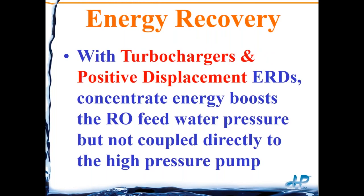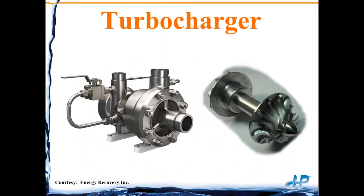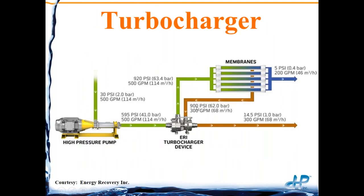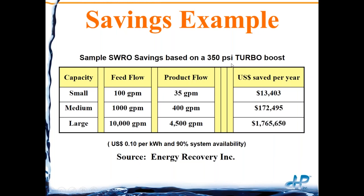With turbochargers and positive displacement, the energy recovery devices take the concentrate energy to boost the RO feed water pressure, but they're not coupled directly to the high pressure pump. With the turbocharger, you have a dual pump that has two impellers on the same shaft. The concentrate is coming and turning the impeller on the concentrate side, which — since it's connected to the impeller of the feed water — is boosting the pressure to the RO system. Here's an example at 10 cents per kilowatt hour showing what you might save with small, medium, and large systems.